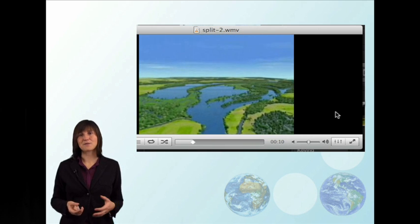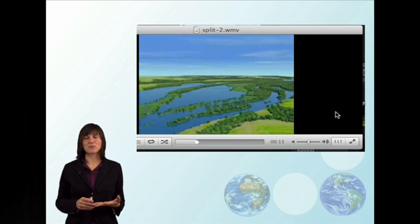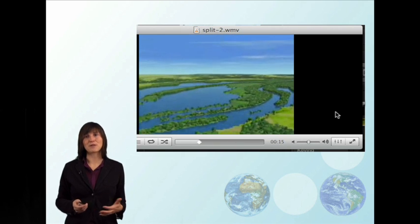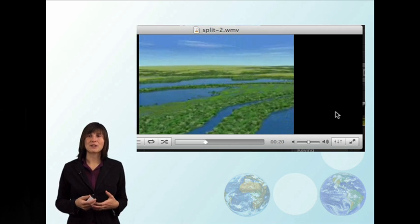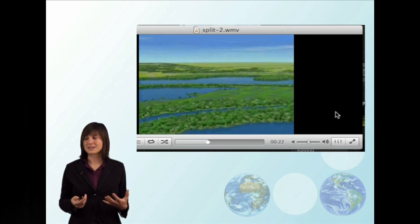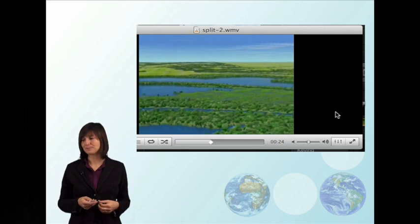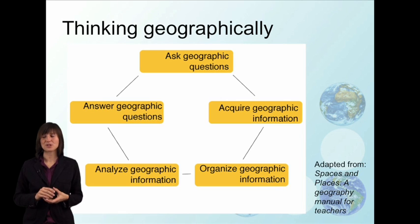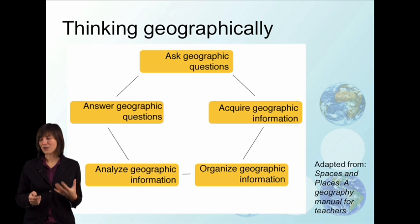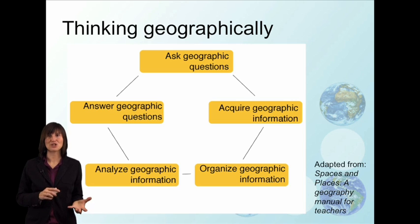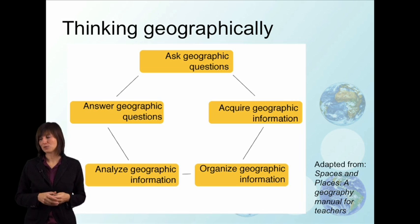To analyze this information, geographers often look for patterns and different processes revealed in the information they've gathered. They bring together what they've found and try to synthesize various explanations. Once we get to the point of answering geographic questions, we can make inferences based on the organized information, distinguish different generalizations and where they apply or don't, and then often new questions emerge from these conclusions.